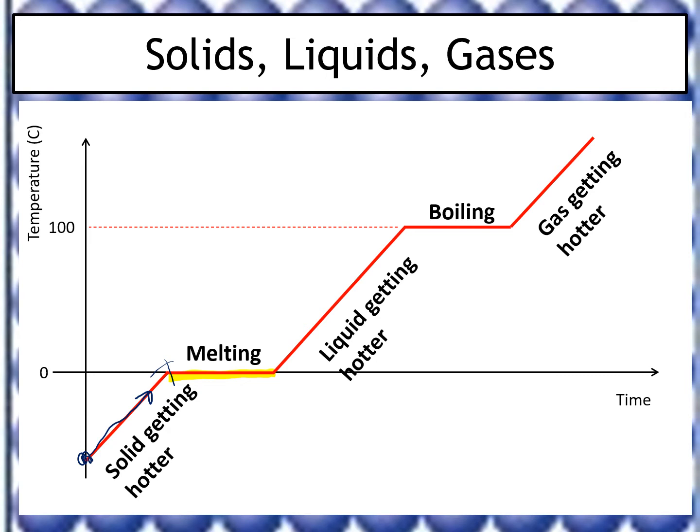As we add more energy instead of making the ice hotter, it's actually breaking the bonds between the particles. Those particles are now able to move past each other — that's how they turn into a liquid. Where the graph is horizontal during melting, we're adding energy, but instead of making the ice warmer, it's breaking the bonds between the particles until all the bonds are broken and we have liquid.